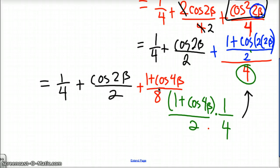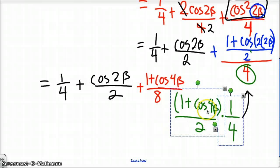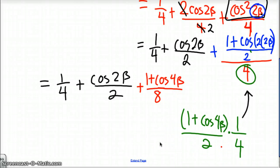So I've arrived at my goal. I have an expression for the value of cosine to the fourth beta that involves no powers greater than 1. Here is my answer. You'll see why this is important when we start solving equations. Take a look at the next example.